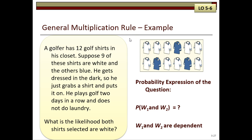So let's take a look at an example. A golfer has 12 golf shirts, 9 are white and 3 are blue. He gets dressed in the dark, so he just grabs a shirt and puts it on. He plays golf two days in a row and does not do laundry. That's a key term, does not do laundry. What is the likelihood both shirts selected are white?